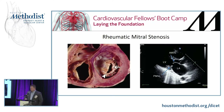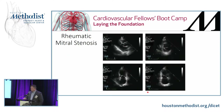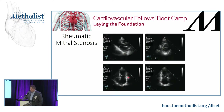Rheumatic mitral stenosis is most commonly described as having a fish mouth appearance of the mitral valve. You have fusion of the cusps and a typical hockey stick appearance of the mitral valve leaflet. Here we have an anterior mitral valve leaflet and a posterior mitral valve leaflet from an apical three-chamber view on TTE. You see that hockey stick appearance from fusion of the anterior lateral and posterior medial commissures. We'll see if we can appreciate any reduction in leaflet motion in a fish mouth view, in a short axis view of the left ventricle.